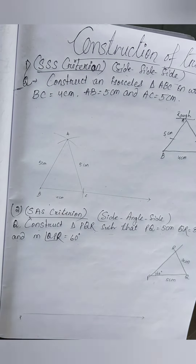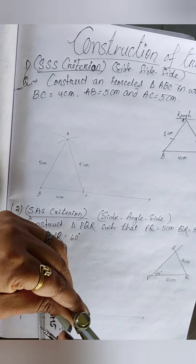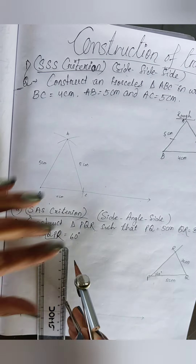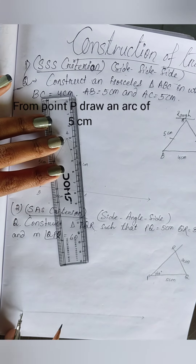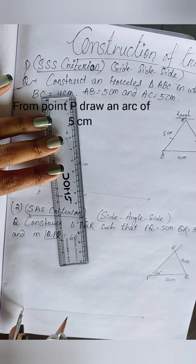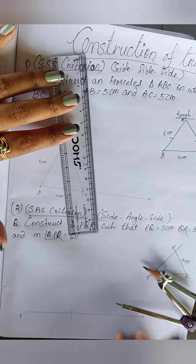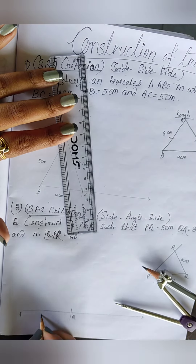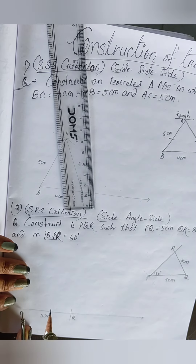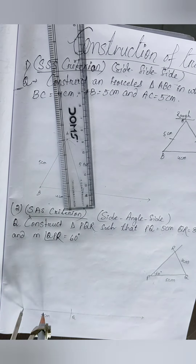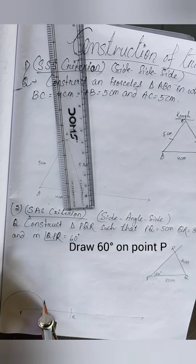The one end point of the ray is P. To get PQ = 5 centimeters, take the measurement of 5 centimeters with the compass, draw an arc, and name it Q. Write Q and 5 centimeters. Now angle P = 60 degrees.